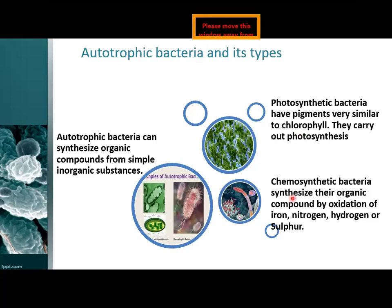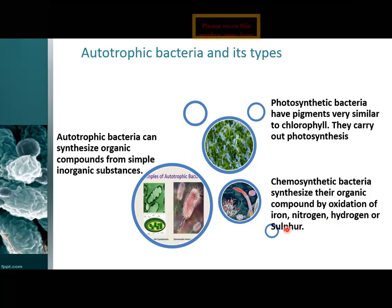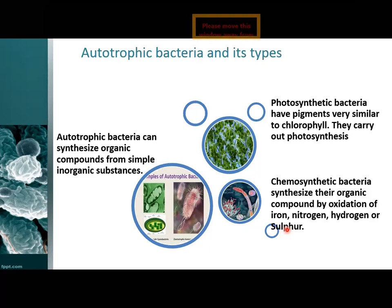Chemosynthetic bacteria synthesize their organic compounds by oxidation - that is, chemical reaction with oxygen - of iron, nitrogen, hydrogen, or sulfur. Mostly chemosynthetic bacteria live underwater in deep oceans, in aquatic plants and animals. Those aquatic plants or animals which live deep underwater - these bacteria live with them or inside them.